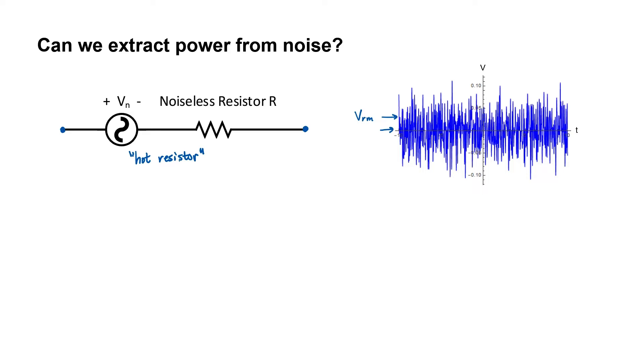What happens if I take this circuit, which has a finite non-zero RMS voltage, and I attach it to another resistor? Will I get power flow around the circuit?